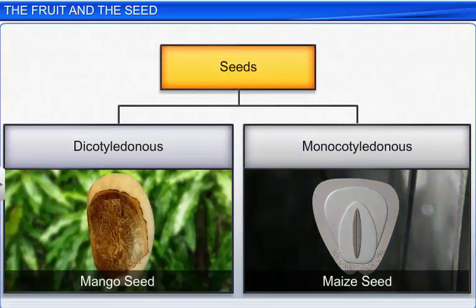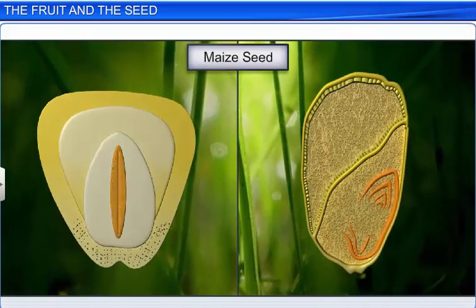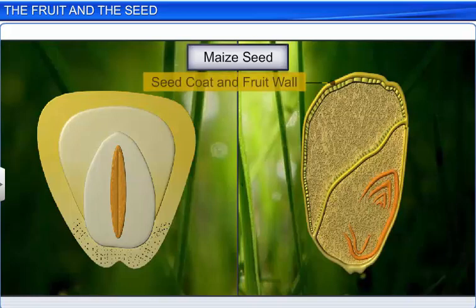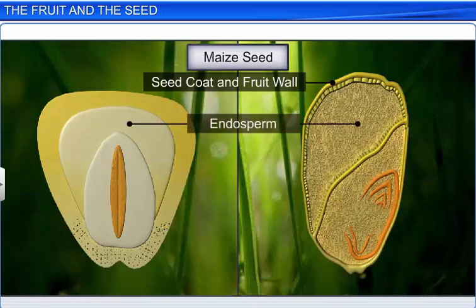Like dicotyledonous seeds, the outermost covering of monocotyledonous seeds is also known as the seed coat. For example, the maize seed has a membranous seed coat that is usually fused with the fruit wall. Moreover, like dicotyledonous seeds, monocotyledonous seeds can be endospermic as in maize, or non-endospermic as in Cymodocea.